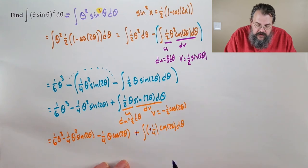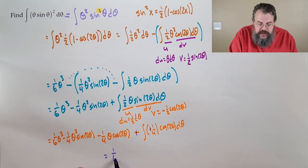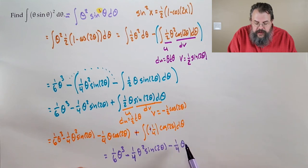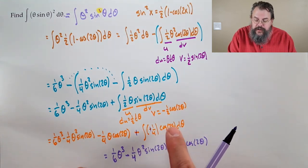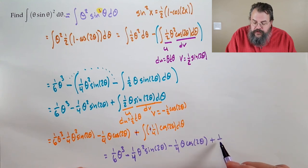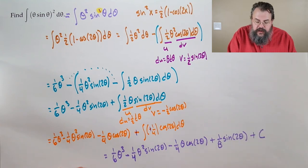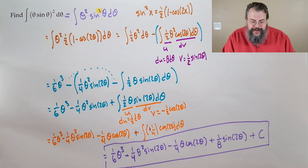Final answer: (1/6)θ³ − (1/4)θ²·sin(2θ) − (1/4)θ·cos(2θ) + (1/8)sin(2θ) + C. The small idea here was: how do we handle sin²? We use a trig power-reducing identity to simplify, then proceed with integration by parts.